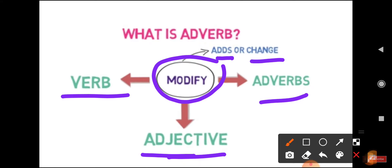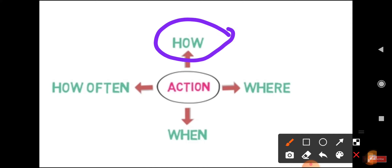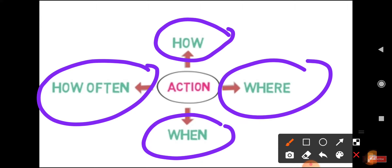How does an adverb modify or describe the action performed by the subject? There are four ways in which an adverb modifies or describes the action: first, how the action is performed; second, where the action is performed; third, when the action is performed; and fourth, how often the action is performed.